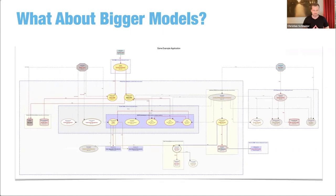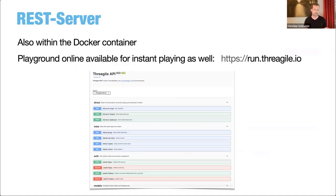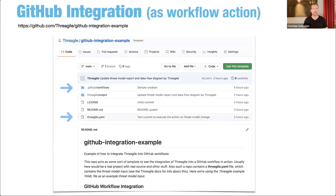Bigger models are supported — the example shown here is small compared to the largest ones seen at customer sites. The auto-layout automatically creates a very nice visual representation even for larger architectures, providing nice documentation built bottom-up. A REST server is available so you can run Threagile as a REST service instead of the CLI. Model macros can automate in interactive wizard style things like adding build pipelines, adding a vault, or adding an identity provider to the model.